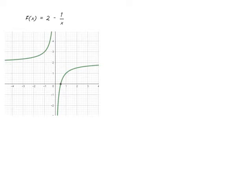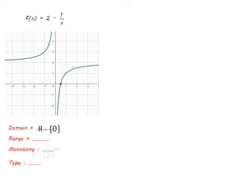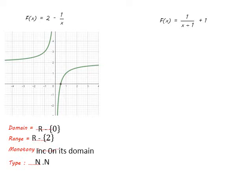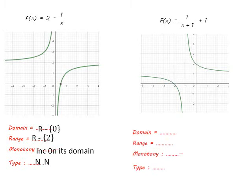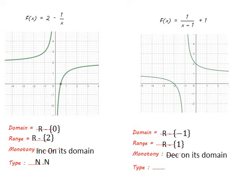For f(x) = 2 - 1/x, the point of symmetry equals (0, 2) and the function is in the second and fourth quadrants. The domain equals ℝ except 0 and the range is ℝ except 2. The function increases on its domain. For f(x) = 1/(x + 1) + 1, the point of symmetry equals (-1, 1), so the domain is ℝ except -1 and the range is ℝ except 1. The function decreases on its domain. Neither function is even or odd.